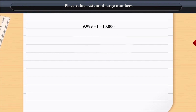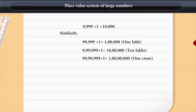Now, if we add 1 to the largest four-digit number, that is 9999, we get the smallest five-digit number. This number is 10,000. That is, 9999 plus 1 is equal to 10,000.